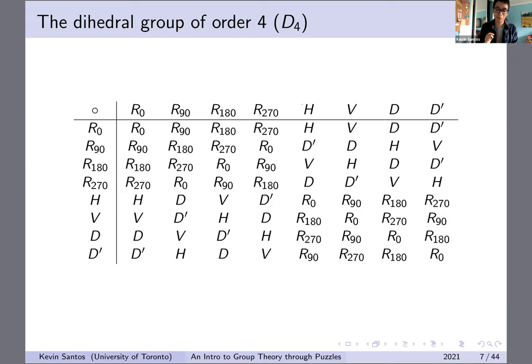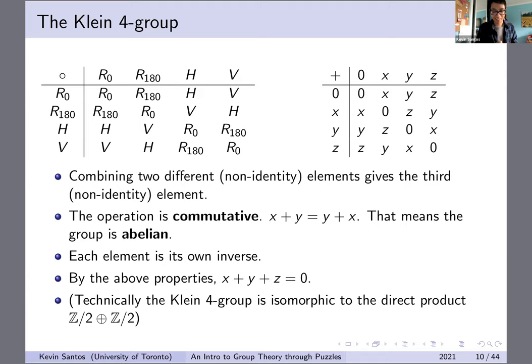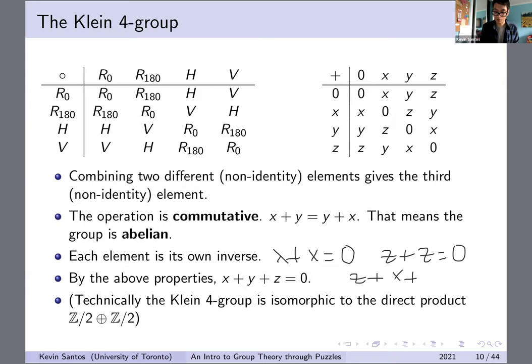The original dihedral group isn't abelian — the order in which you compose things actually matters. For example, r270 composed with h gives d, but going the other direction gives d prime. Abelian groups have some nice properties, which is why we like to have them. Another interesting fact about the Klein Four group is that each element is its own inverse, so combining each element with itself gives you back zero. That means any way you combine the three non-zero elements gives you back zero: z plus x plus y also equals zero. Are there any questions so far?